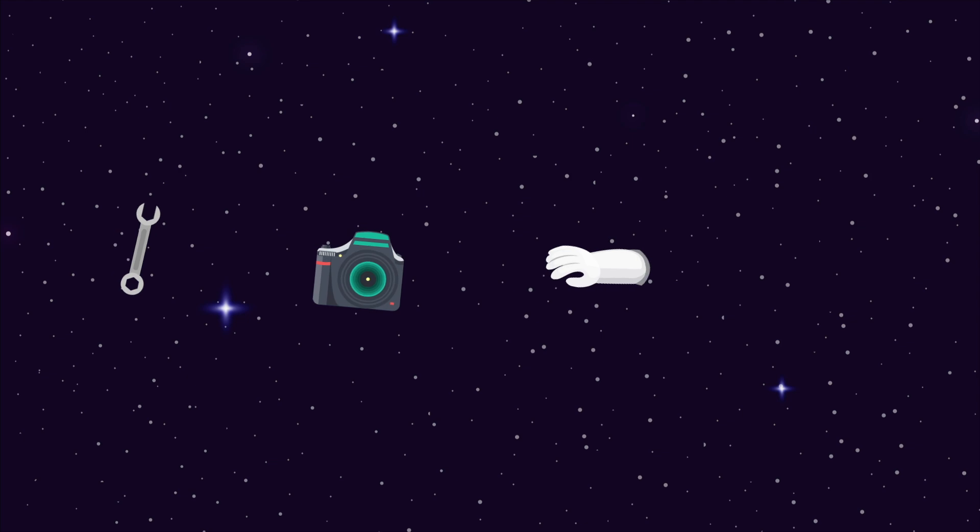Some of the debris in space includes unique items like a glove, a camera, a wrench, and even a toothbrush.